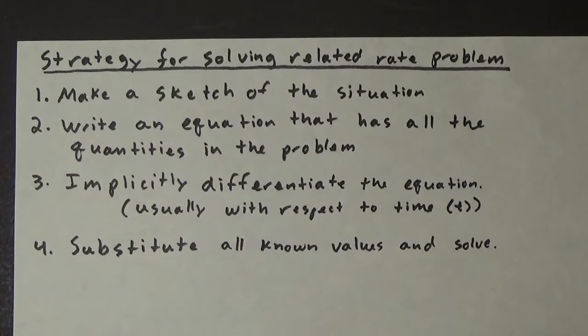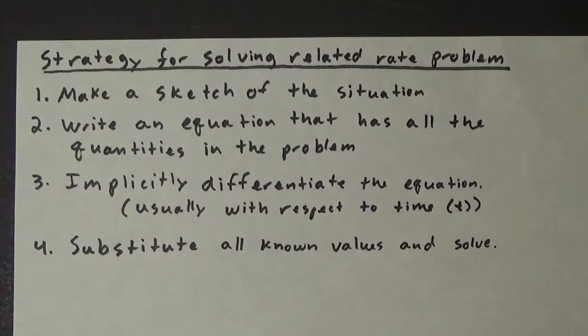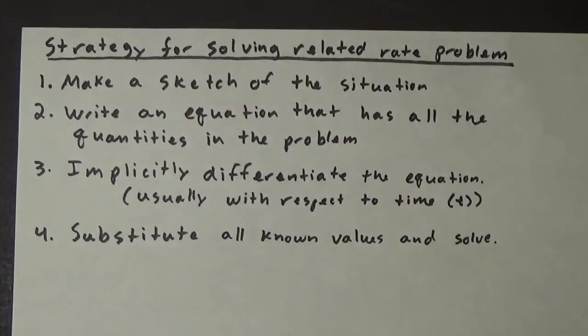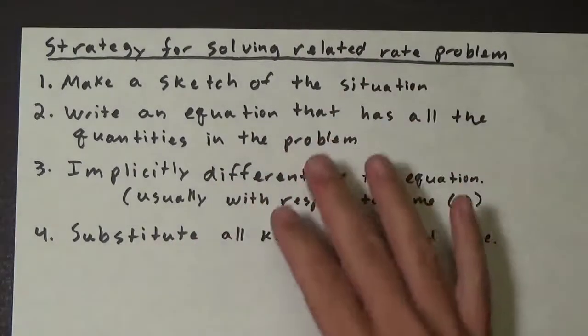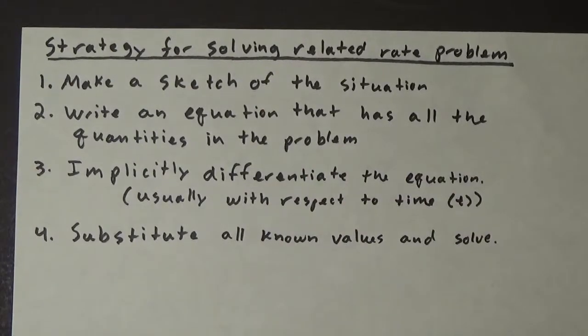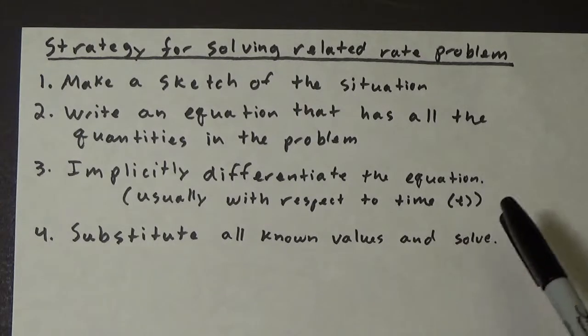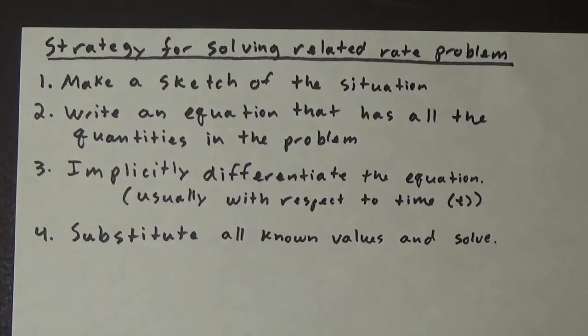Step three: we're going to implicitly differentiate the equation, usually with respect to time. When we take a derivative we're finding the instantaneous rate of change of a function with respect to some variable. We usually do this with respect to x, but it doesn't have to be with respect to x, it can actually be with respect to any variable. And in this case with these related rate of change problems, it's with respect to time.